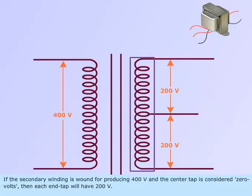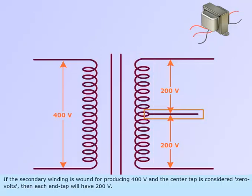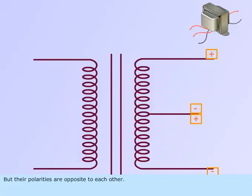If the secondary winding is wound for producing 400 volts, and the center tap is considered 0 volts, then each end tap will have 200 volts, but their polarities are opposite to each other.